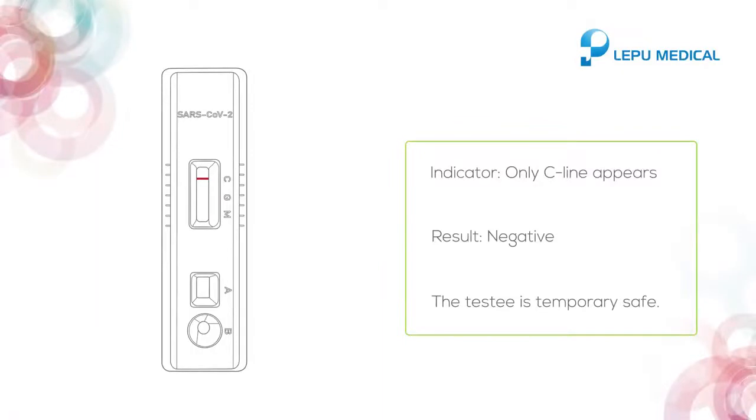If only C line appears, it indicates negative, and the testee is temporarily safe.